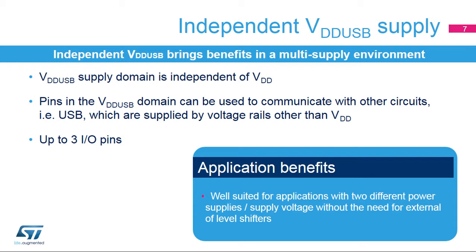The VDD-USB domain allows the STM32 to communicate with different logic supplies. Up to three I/O pins in this domain can be used to communicate with other logic circuits, for instance USB, which are supplied by voltage rails other than VDD. The use of independent voltage supplies may eliminate the need for external voltage shifters in the design.